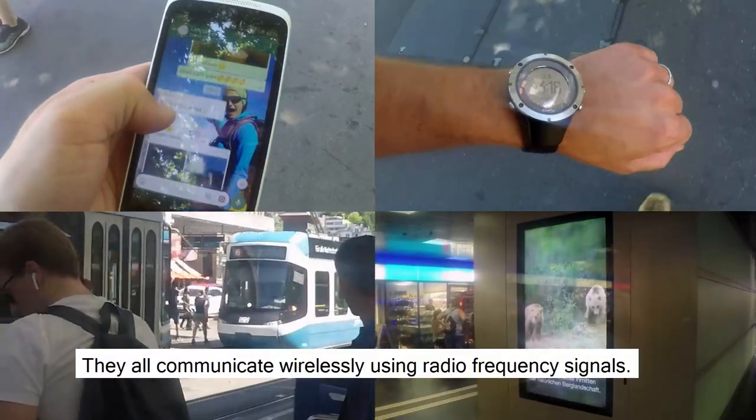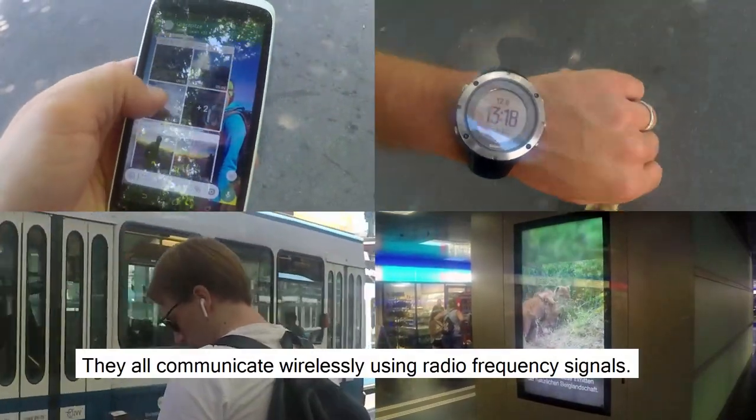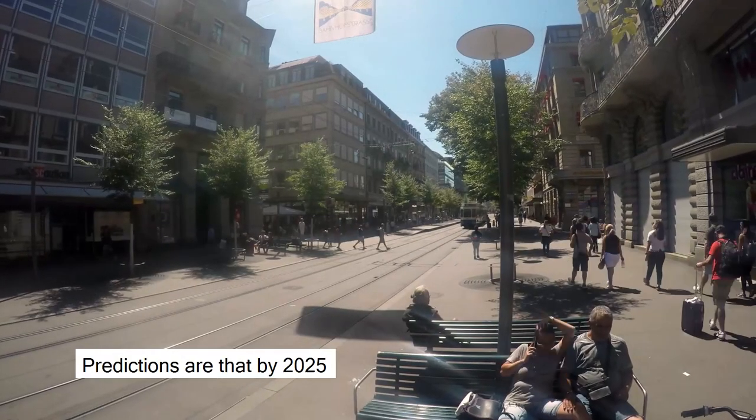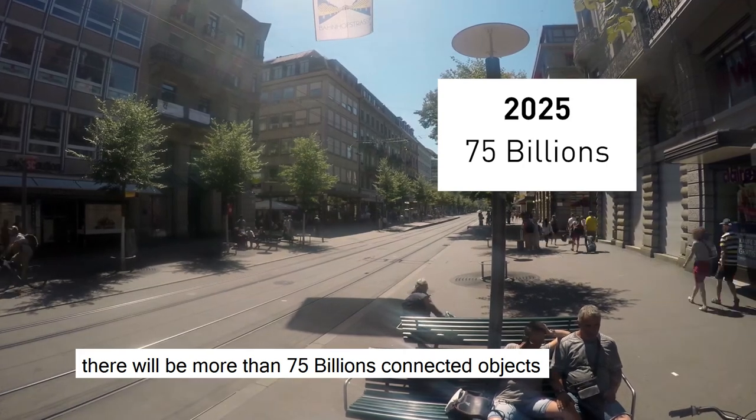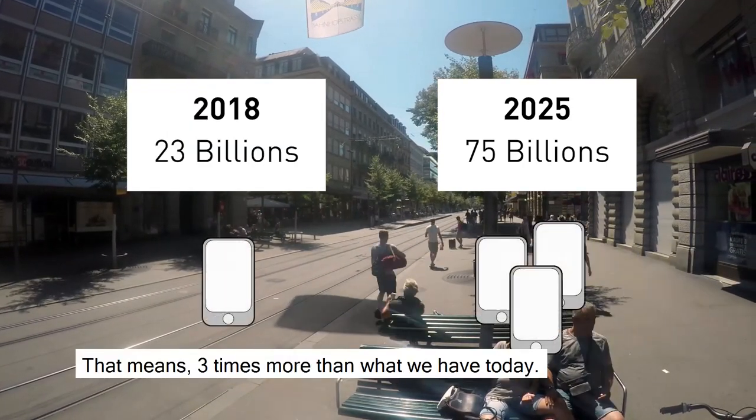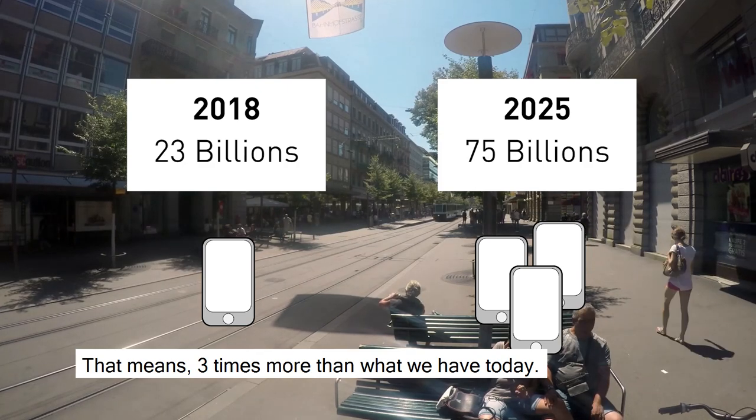They all communicate wirelessly using radio frequency signals. Predictions are, by 2025, there will be more than 75 billion connected objects. That means three times more than what we have today.